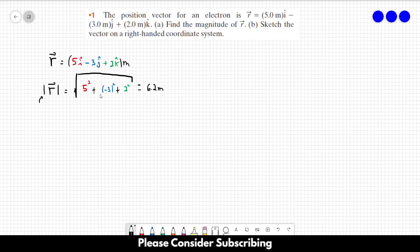And this gives us roughly 6.2 meters. Don't forget that the magnitude of a vector has units as well. A lot of students forgot to include the unit of the vector. So, this is the answer of letter A.